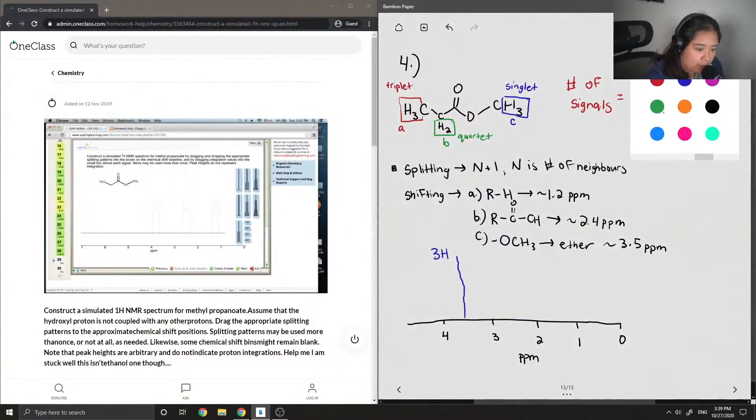And then let's look at the one that splits as a quartet. It is at around 2.4 ppm. I'm just going to draw it splitting like this. And there's only two hydrogens. So its integration value is 2H.